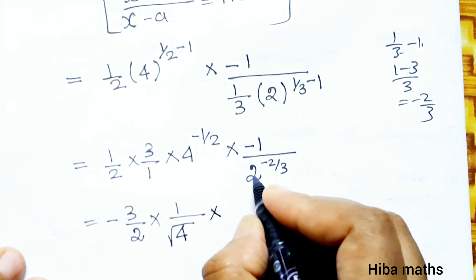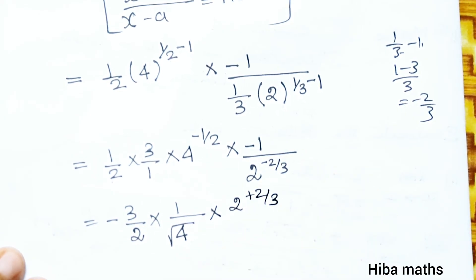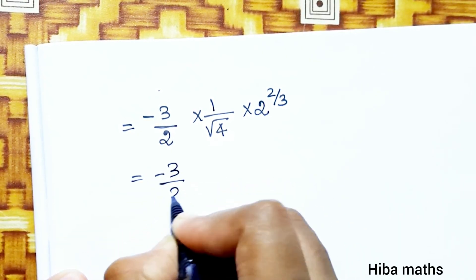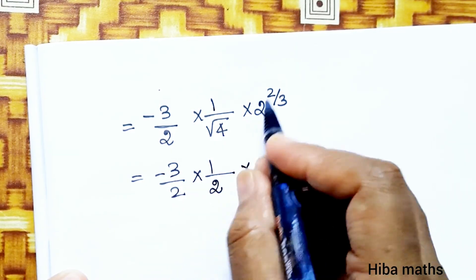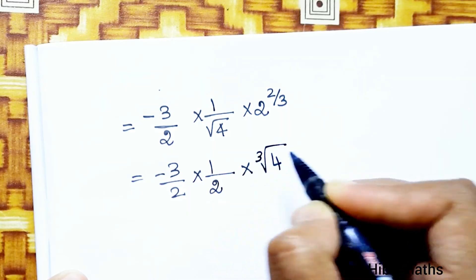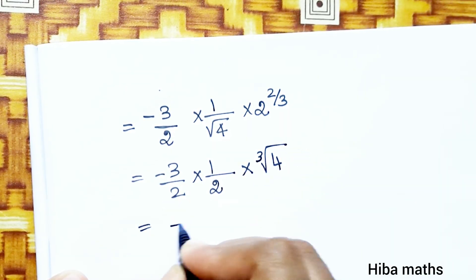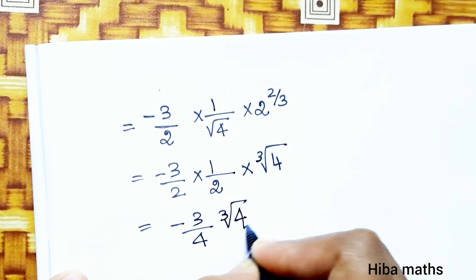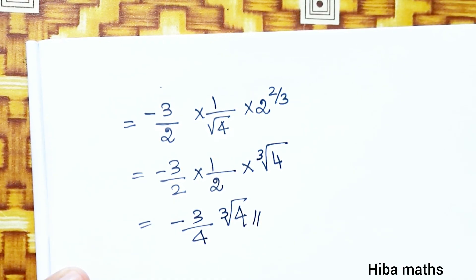Next step: 4^(minus 1/2) is 1 over root 4, which is 1/2. So the final answer computes as minus 3/2 into the remaining values, giving the result.